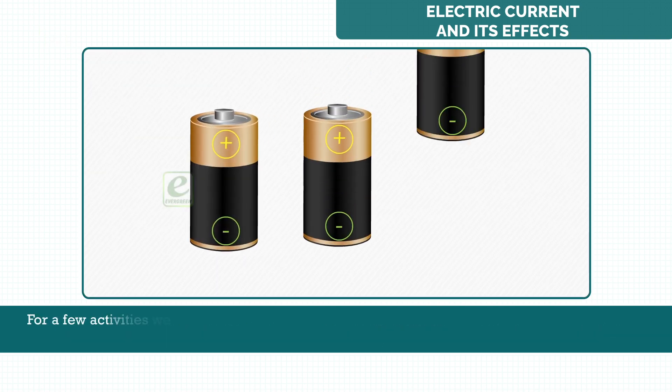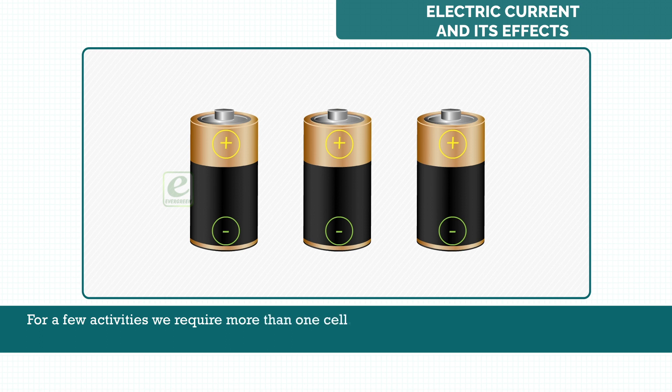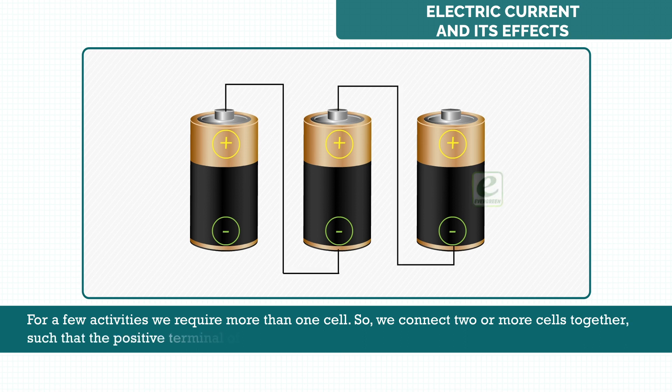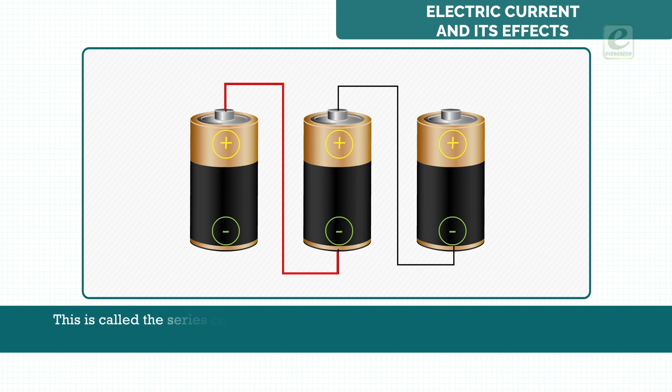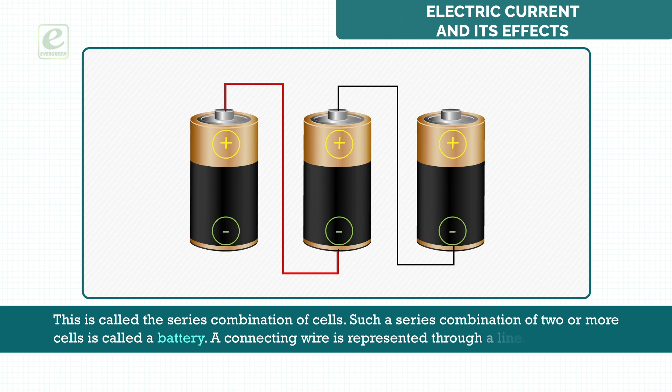For a few activities, we require more than one cell. So, we connect two or more cells together such that the positive terminal of one cell is connected to the negative terminal of the next cell. This is called the series combination of cells. Such a series combination of two or more cells is called a battery. A connecting wire is represented through a line.